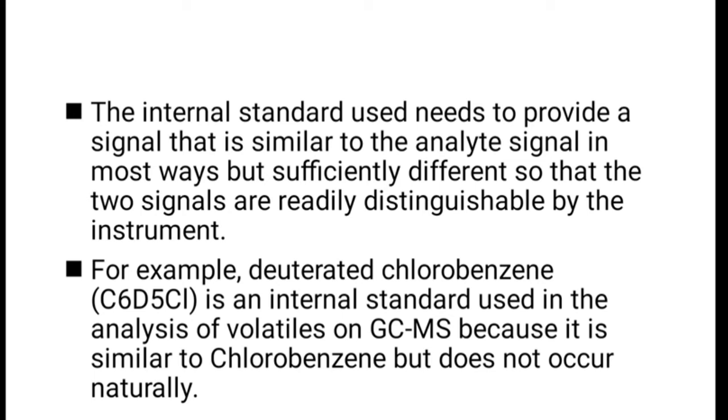For example, deuterated chlorobenzene is an internal standard which is used in the analysis of volatiles on GC-MS because it is similar to chlorobenzene but does not occur naturally. Means C6D5Cl, it is an artificially prepared component or compound and the chlorobenzene is a naturally occurring compound. Here we have to determine the analyte signal. Here analyte is the chlorobenzene and the internal standard substance is the deuterated chlorobenzene.